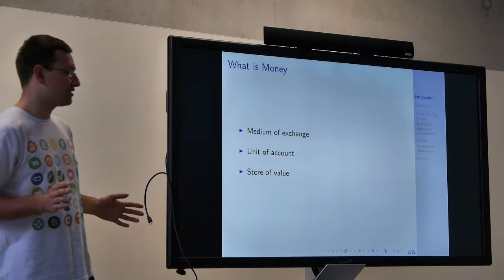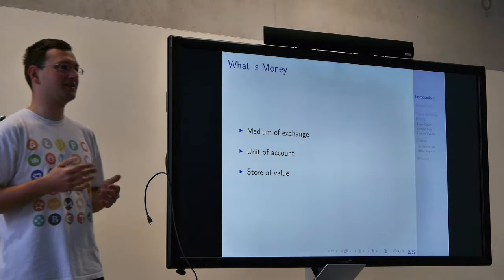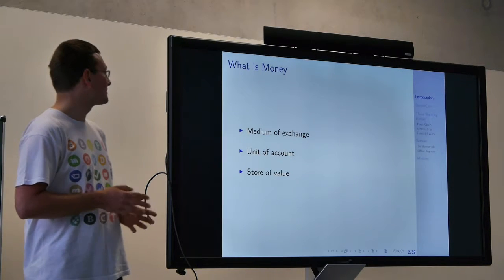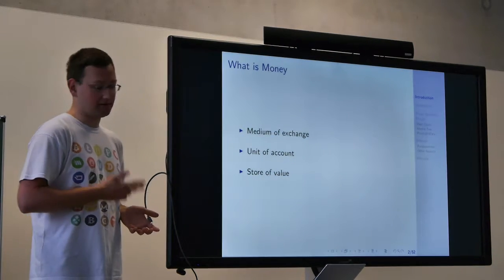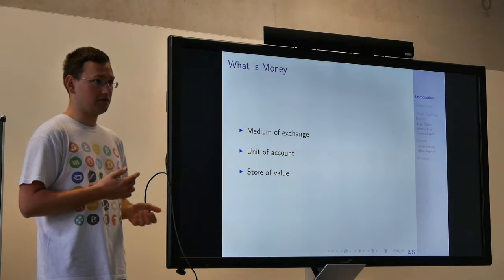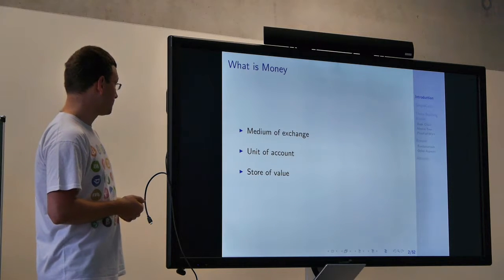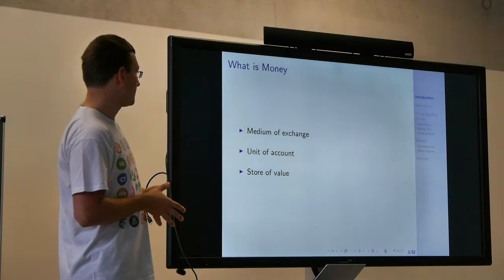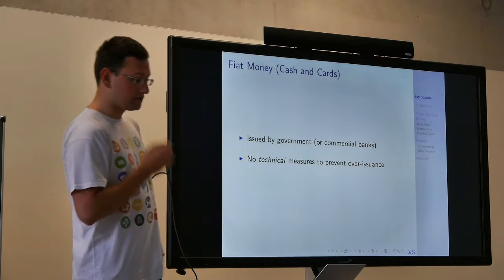Let's talk generally about what money is. Bitcoin is some kind of form of electronic money. The three main functions that money performs are: medium of exchange — we pay each other, like here in Europe with euros; unit of account — we measure and compare prices; and store of value — if we have savings, we store them in savings accounts, cash, gold, or whatever.